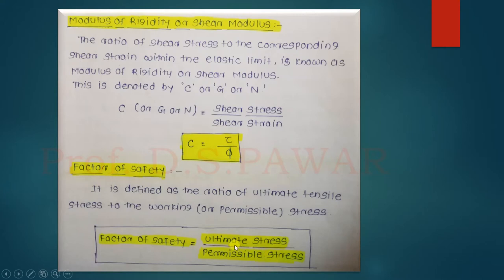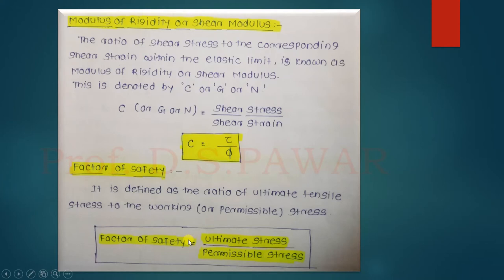For example, if we consider a structure where the ultimate stress is 500 N/m², and the permissible stress is 400 N/m², then the factor of safety is 500 divided by 400. For concrete structures, we always use a load factor of 1.5 when calculating or doing any design.